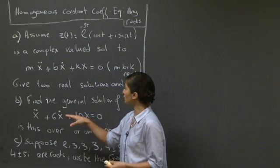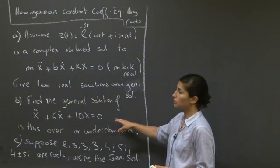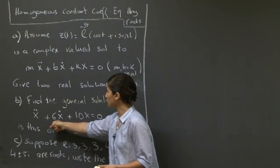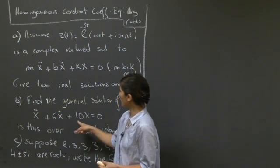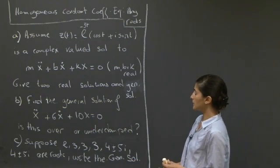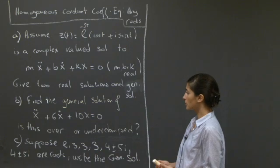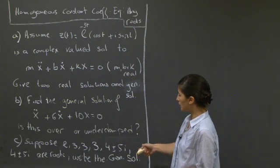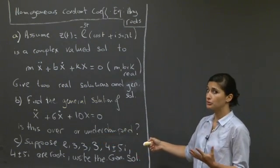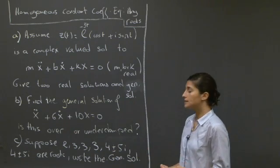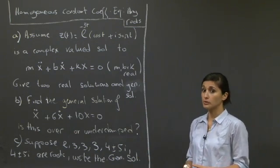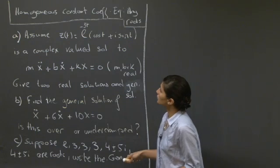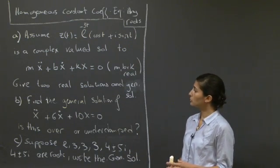In the second part, we're asked to find a general solution for another differential equation of the same form as part A, with real values b equals 6, m equals 1, and k equals 10. We're also asked if the system is overdamped or underdamped. In the last part, we switch gears and are given eight roots to an eighth-degree polynomial, including repeated roots, and we're asked to write down the general solution. Take a few minutes, and we'll come back to solve these problems.